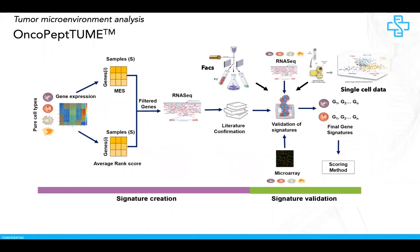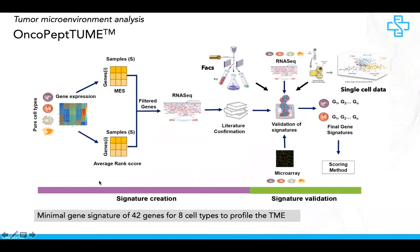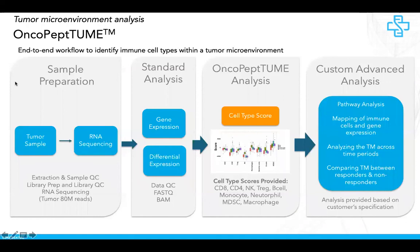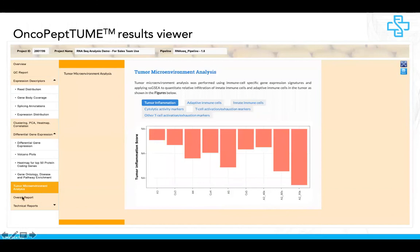We've also developed a sophisticated algorithm to profile the tumor microenvironment by creating a gene expression signature from eight different immune cell types. Shown here is our workflow for creating this minimal gene expression signature from publicly available data such as TCGA, and validation of these signatures to confidently provide immune enrichment scores for different immune cell types. Oncopeptium — our proprietary platform — is an end-to-end workflow to identify different immune cell types within a tumor environment and can be used to inform therapy and novel biomarker discoveries, included as part of our RNA-seq analysis services.